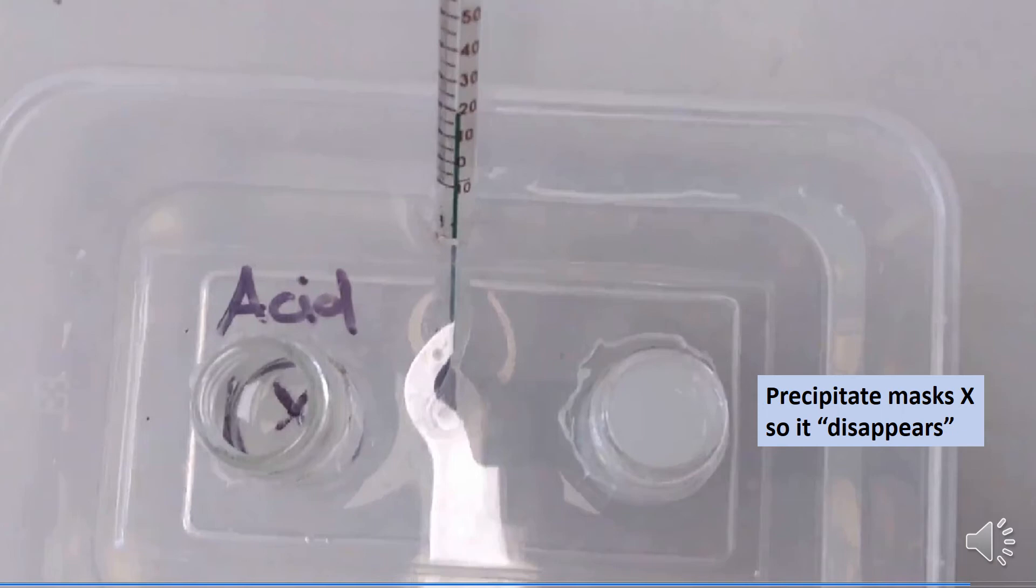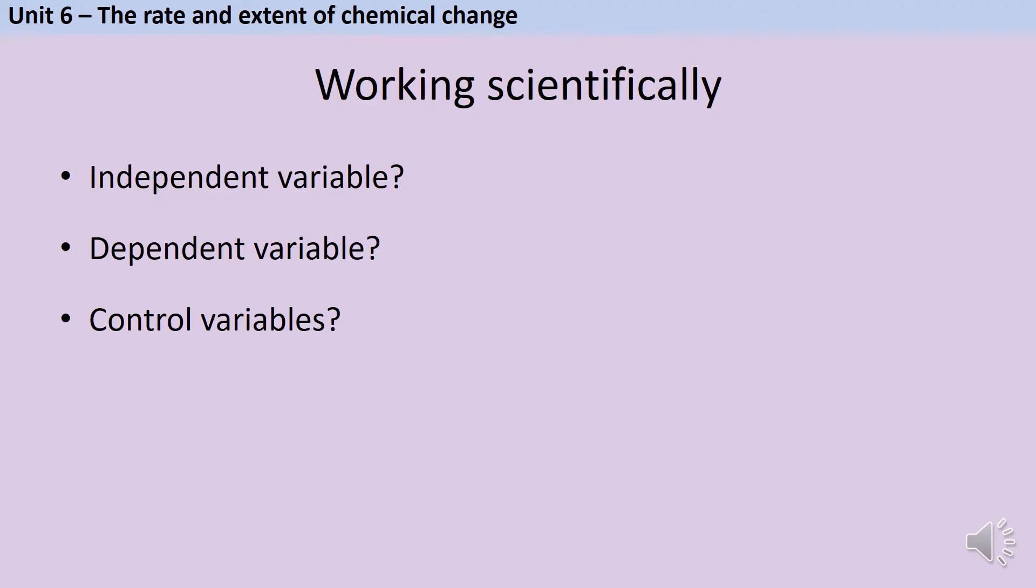One of the big issues with this experiment is that it's not strictly objective. I'm not making a measurement and saying when half a gram of sulfur has been made, then I'll stop the clock. It's all down to my own personal eyesight and judgment. So one way that I could improve this experiment would be using a light sensor rather than using human judgment. In a question about this reaction, you could easily also be asked some working scientifically questions. So these are the things that stretch across biology and chemistry and physics and assess, do you know how to do good science? So you might be asked to identify some variables.